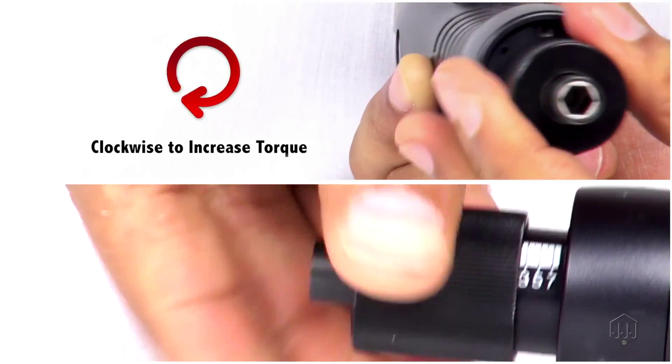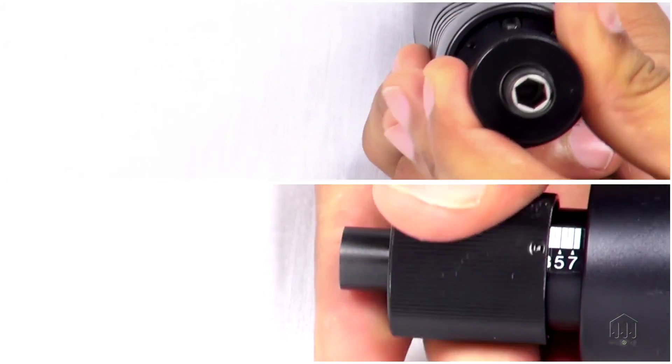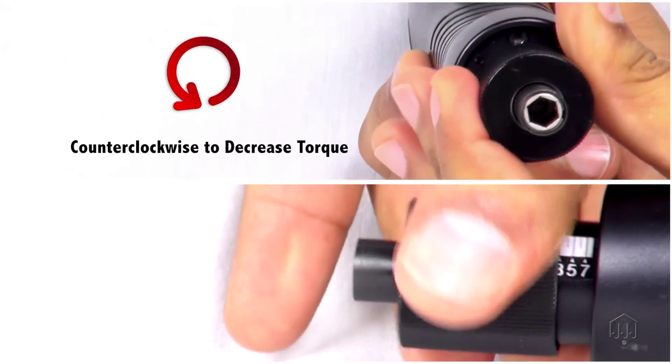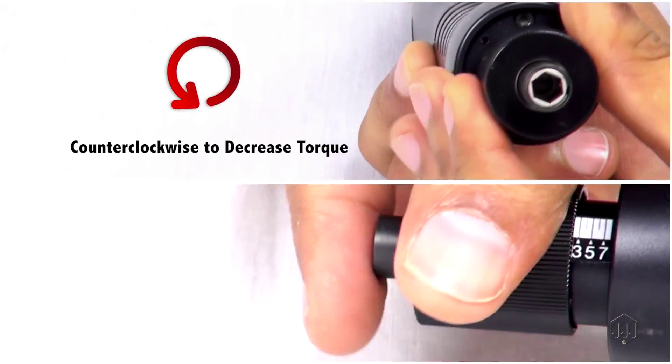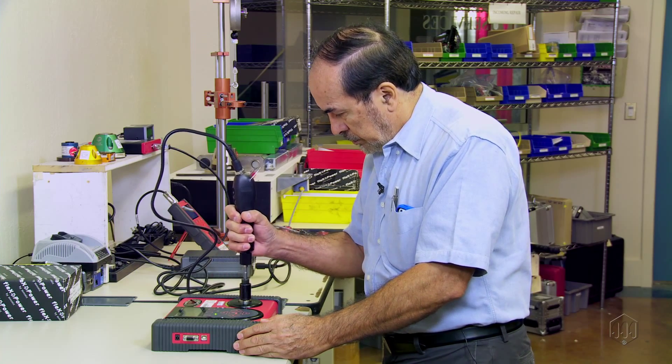Rotate the adjustment nut clockwise to increase torque or counterclockwise to decrease. Always verify the torque setting with a torque testing system.